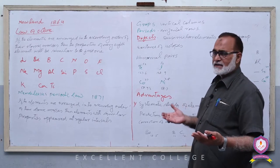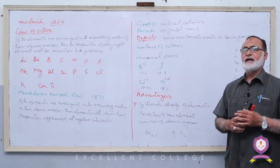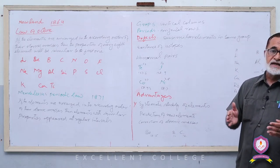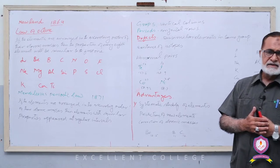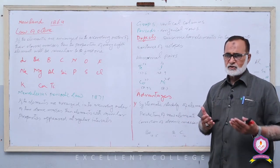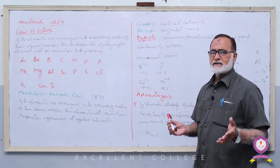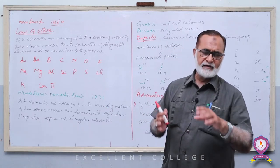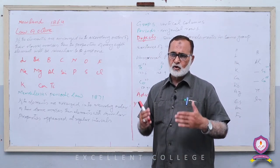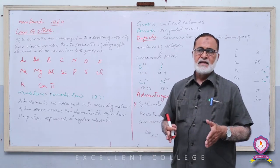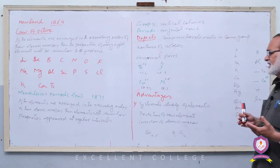Advantages of Mendeleev's Periodic Table: پہلا advantage — the study of the properties of elements becomes more easy and systematic۔ جب تک Periodic Table نہیں بنا تھا، ہمیں elements کی properties individually study کرنی پڑتی تھیں۔ جب Mendeleev نے Periodic Table بنایا اور groups بنے، تو ایک group کی set of properties دیکھ کر اس group کے تمام elements کی properties study ہو جاتی ہیں۔